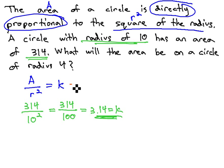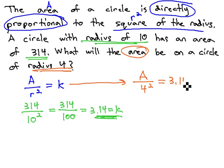Now, we're ready to answer the question, going back to the original problem. We want to know the area when the radius is 4. Area divided by the radius squared, or 4 squared, equals our constant, 3.14.